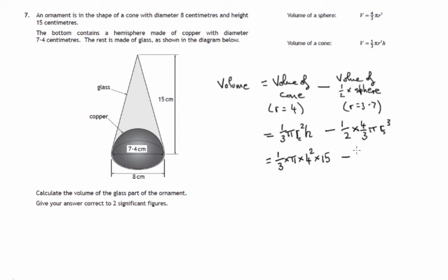We've then got to take away a half times 4 thirds times pi times the radius of the sphere, 3.7 cubed.